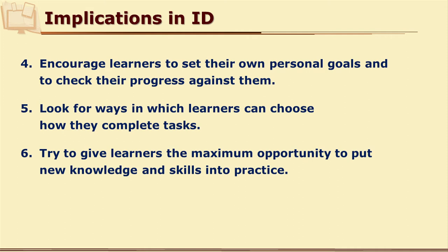Knowledge for the sake of knowledge and information for the sake of information does not work in the case of adult learners. Though children receive information without understanding its relevance, adult learners need to practice, they need to work, and they need to apply whatever knowledge they are gaining. So provide them opportunities to apply their own knowledge.